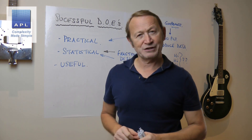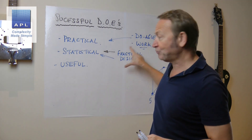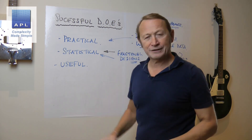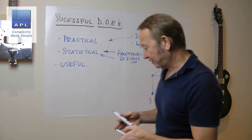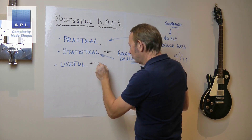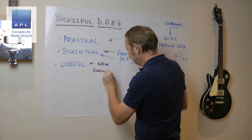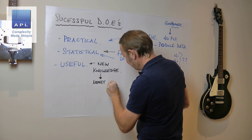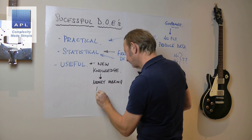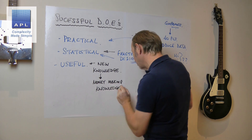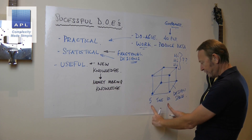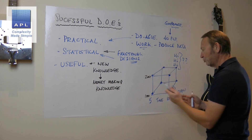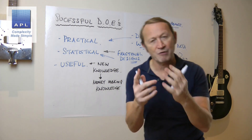So you've got to be practical, you've got to be statistically right, and finally the experiment needs to be useful. Useful means you want to learn new knowledge and money-making knowledge. You choose how big the design space box is — you chose time to be between five and ten, temperature to be 100 to 200. You choose how big the box is, so you choose how much knowledge you're going to create when you do an experiment.